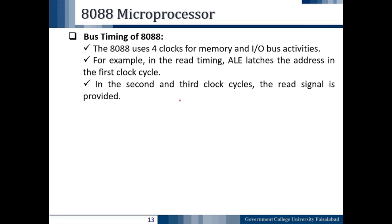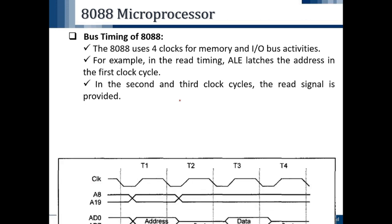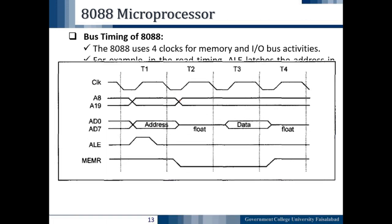In the second and third clock cycles T2 and T3, the read signal is provided. As seen in the diagram, the memory read signal, which is an active low signal, is provided by the 8088 microprocessor. During this memory read cycle, the process of fetching the data is completed up to the fourth clock cycle T4.